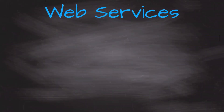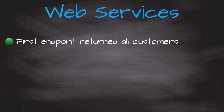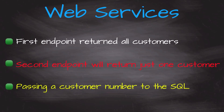Our first endpoint used the GET HTTP method to return all customers — a very simple select statement was run. In this next example, we will still be using the GET method, but this time the endpoint will only return one customer. We have to pass it the customer ID as a parameter, then run the SQL statement with a WHERE clause. It will then return just one customer.